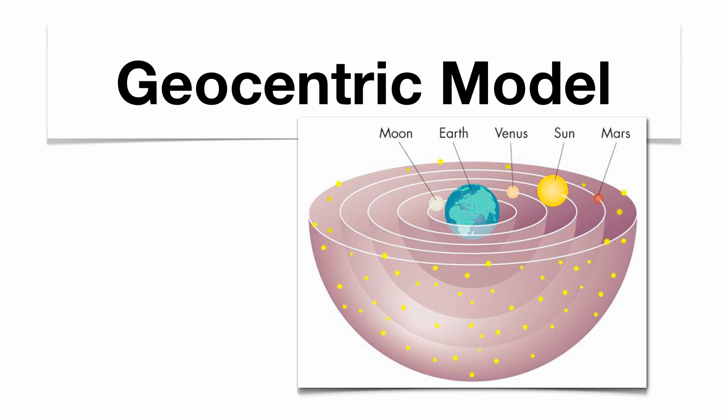Because ancient astronomers couldn't understand that we're moving not only through rotation but also through revolution, they only could observe. So they saw the moon, the stars, the sun, the planets, all rising in the east and setting in the west without actually feeling the Earth move underneath their feet.